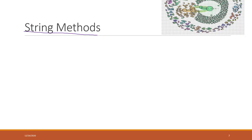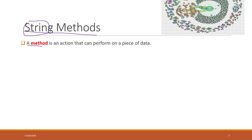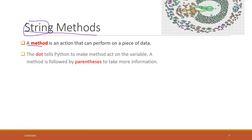Strings also have methods. A method is an action that can be performed on a piece of data. To call a method, we use dot notation. The dot tells Python to make the method act on that variable. For example: a.method_name() — the dot is followed by the method name and parentheses.